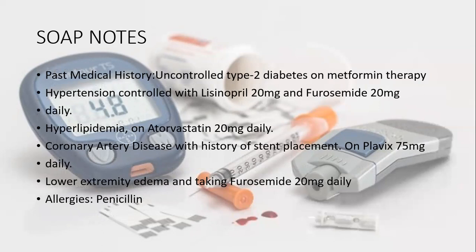Regarding past medical history: she has uncontrolled diabetes on metformin therapy, which has already been discussed as inadequate. For hypertension she is taking lisinopril, for hyperlipidemia she is taking atorvastatin 20 mg daily, for coronary artery disease she is taking Plavix 75 mg daily, and for edema she is taking furosemide 20 mg, which is a diuretic.